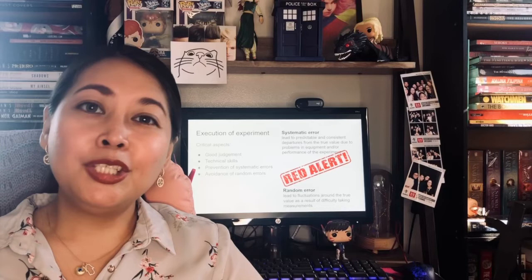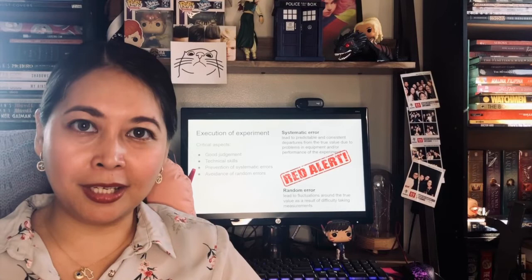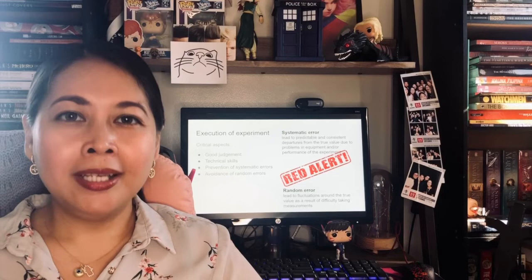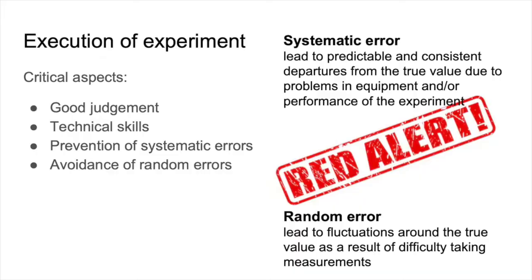So now you have your experimental design ready, you've purchased the equipment and materials, and you're all set to do the experiment. When you're ready to execute the experiment, there are certain key factors to remember. First, make sure to employ good judgment, which is linked to common sense but also heavily based on previous knowledge on doing the experiment — so your RRL will be very important. When you don't have enough good judgment, that's when you start talking to people, particularly your advisor or senior scientist. Of course, you should have enough technical skills to perform the experiment; if you're not confident, consider undergoing workshops or trainings before starting.